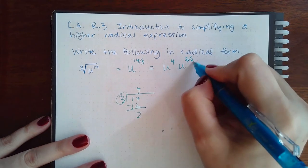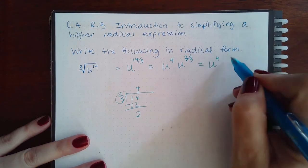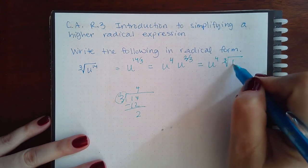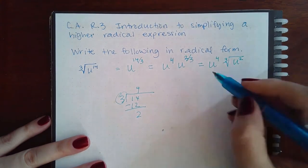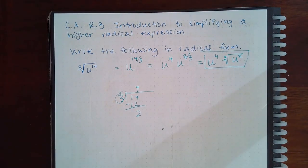And then this goes back into its radical form, which becomes the cube root of u squared. That's the answer to the problem. Because we used the strategy that we were using before, it works.